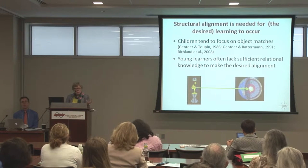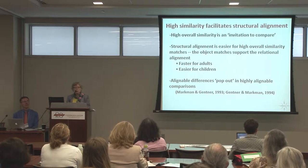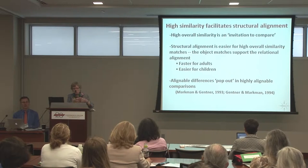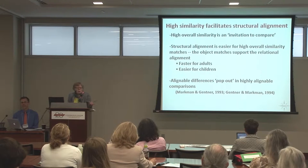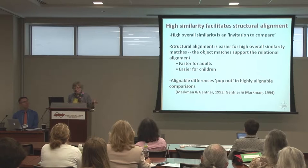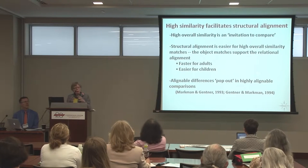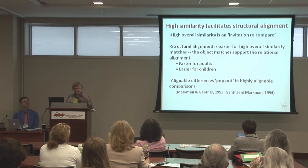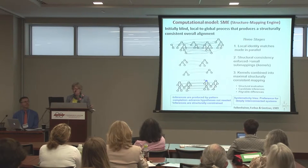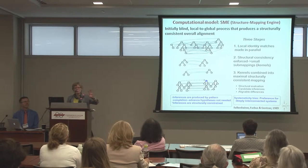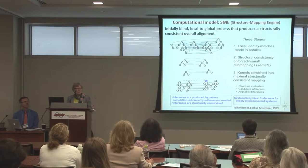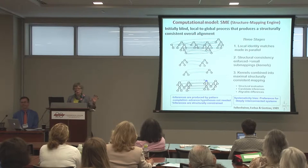One of the things we have to worry about is how do we make sure with learners who don't have much background that it all works. One way that you can get an alignment to work is use high similarity — where the similarities in the objects are compatible and consistent with the best relational alignment. This is what we call an invitation to compare. High similarity prompts comparison; you don't have to tell people to compare these. We all notice high similarity whether we're ready for it or not. Furthermore, if you have high similarity, the object matches will support the relational match, meaning you're less likely to misalign, and alignable differences kind of pop out. There is a computational model, and if you run it, you'll find that the high similarity comparison will far faster and more inevitably lead to the correct relational comparison.